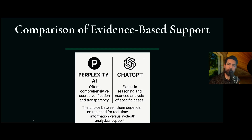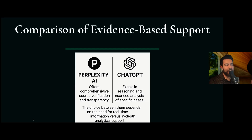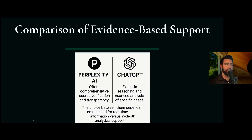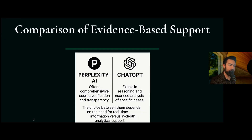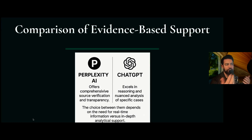A recommended workflow: get evidence-based knowledge and research papers from Perplexity AI, then have your patient scenario in ChatGPT with all of the patient information. Then ask ChatGPT to use the evidence-based guideline from 2025 to guide your plan for treating your specific patient. The best case scenario is if you mix and match these tools to get the best result.